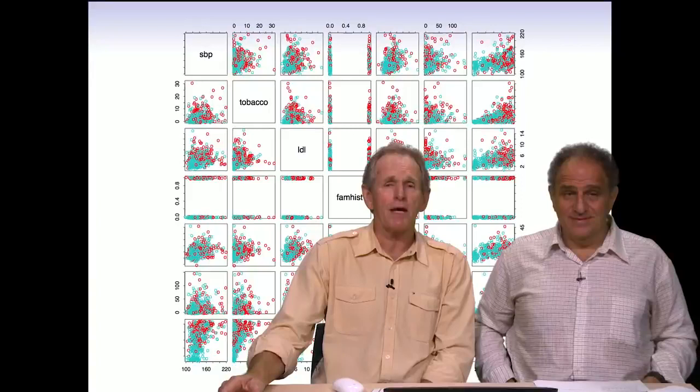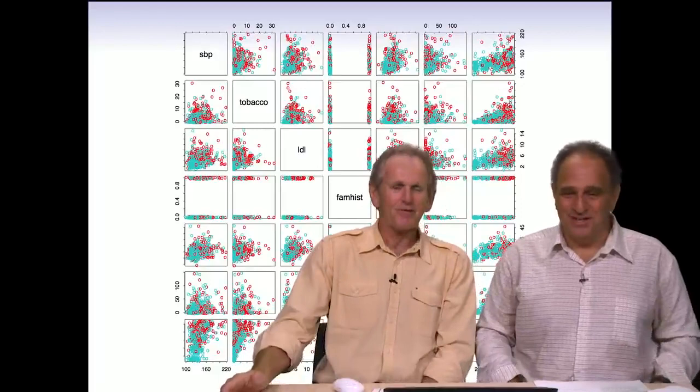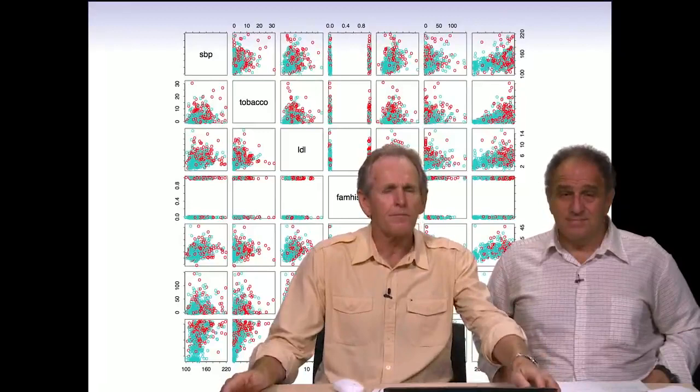These data come from a region of South Africa where the risk of heart disease is very high — over 5% for this age group. The men there eat lots of meat — meat for all three meals. In fact, meat is so prevalent that chicken is regarded as a vegetable. You can see there are correlations in these data, and the goal is to fit a model that jointly involves all these different risk factors to come up with a risk model for heart disease, colored in red.